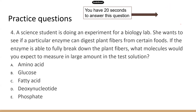Next question: a student is digesting plant fibers. Plant fibers are made up of carbohydrates. When you digest carbohydrates, these molecules are broken down to their monomers. The monomer for carbohydrate is glucose, so the correct answer is B.